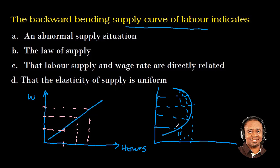And then there is a backward bending of the supply curve of labour. So let us check the answer options. Option A says an abnormal supply situation. Of course, this is abnormal. This is the normal supply curve of labour situation whereby the price increases and the worked time also increases. But once we start having a backward bending supply curve, this is an abnormal supply situation.